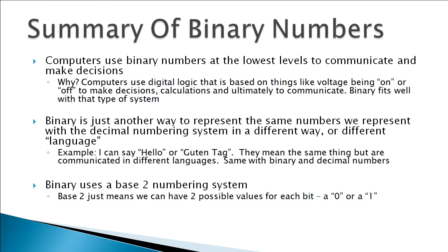Binary numbers are really just a different language — a different way to represent the same numbers we use every day with our decimal numbering system. For example, I can say 'hello' or, in German, 'guten tag' — they mean the exact same thing but communicated differently. Binary uses what we call a base-2 numbering system, meaning there are only two possible values for every digit — technically called a bit — so every bit can either be a 0 or a 1.